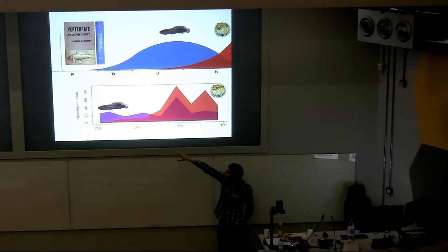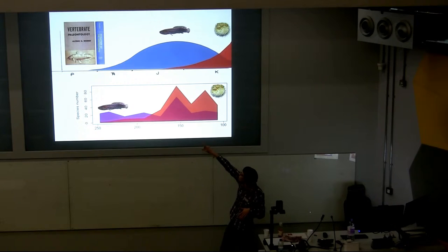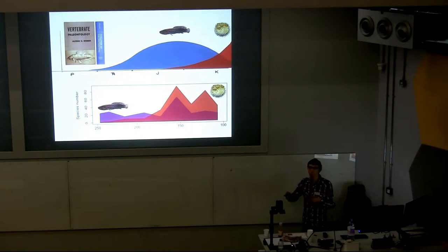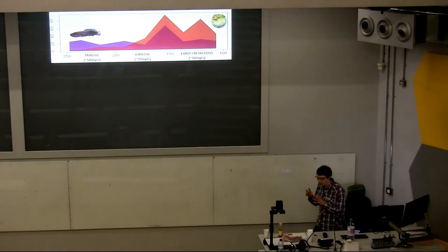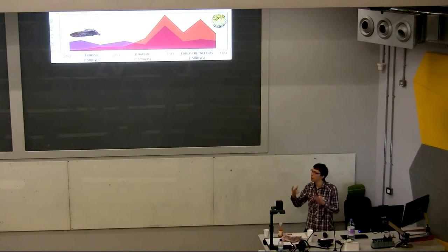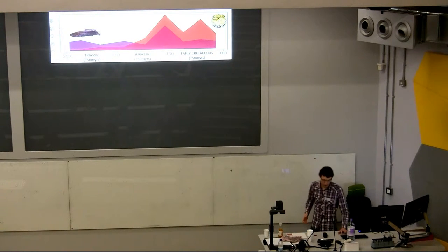Furthermore, Holostean diversity stays pretty much flat throughout this entire period, apart from a spike due to sites like Solnhofen and Siren. The teleosts overtake them by the late Jurassic and hold that position until the present day. But that isn't really the main focus of my talk — these taxonomic patterns. I was really more interested in the phenotypic rise of the teleost fishes.